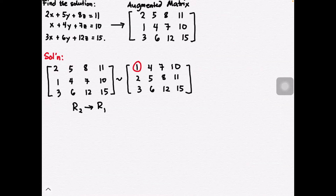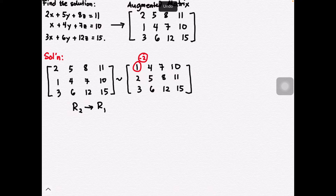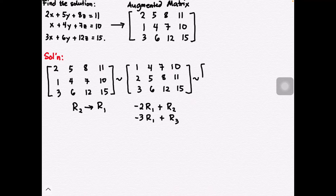Having one as a pivot point makes it easy to make the rest of the entries in that column zero. We multiply one by negative two and add that to the second row to get zero there. Similarly, we multiply one by negative three to get zero in the third row. So we perform: negative two times the first row added to the second row, and negative three times the first row added to the third row.